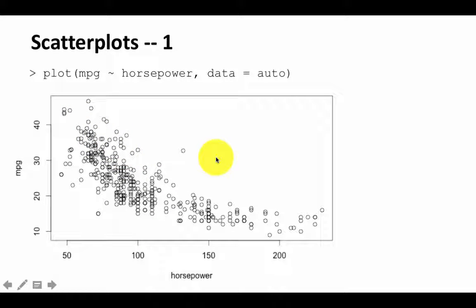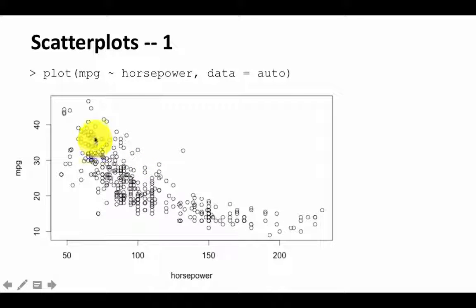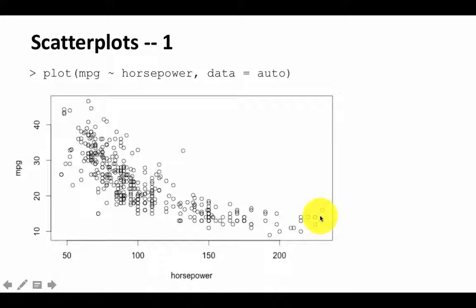But of course, this is not an exact function, because if you drew a line, all the points would not fall on it — most would fall off the line. So this is not a well-defined function, but it gives us an idea of a trend that you see in the data.